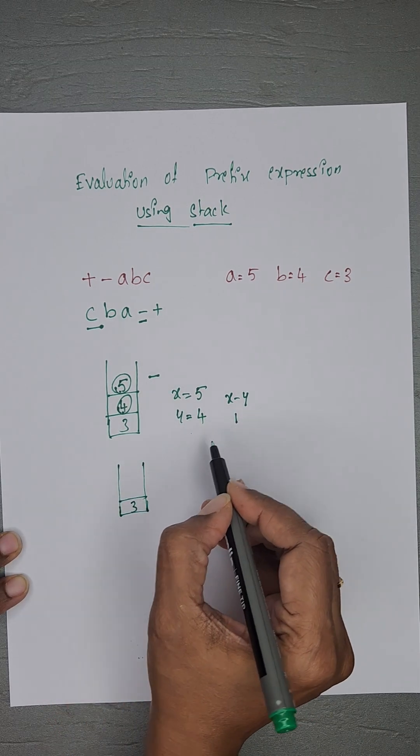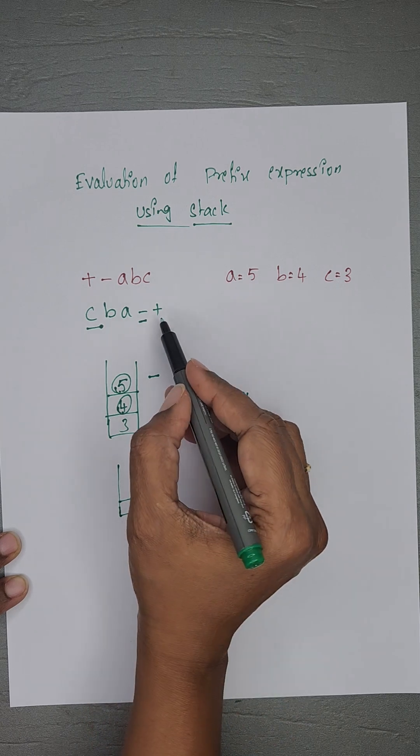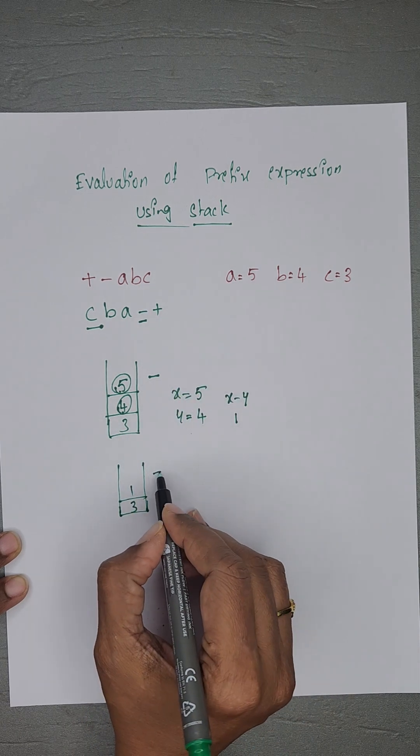In the stack, there is only one element, 3. Now insert 1. The next character is plus. Again, perform the operation.